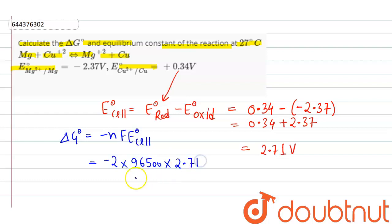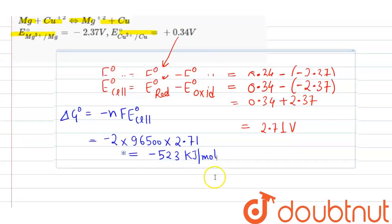Now solving this, we get -523 kilojoules per mole. So this is the ΔG⁰ value.